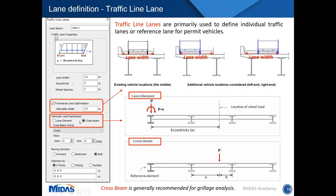If you select 'lane element,' loads are only applied on the reference element — with a vertical component plus a moment. If you select 'cross beam,' loads are applied at that particular position and distributed through the cross beams to all longitudinal girders. For a grillage analysis, cross beam is generally recommended. Midas also offers transverse lane optimization, where the software floats vehicles within the available width — creating left, right, and center positions.